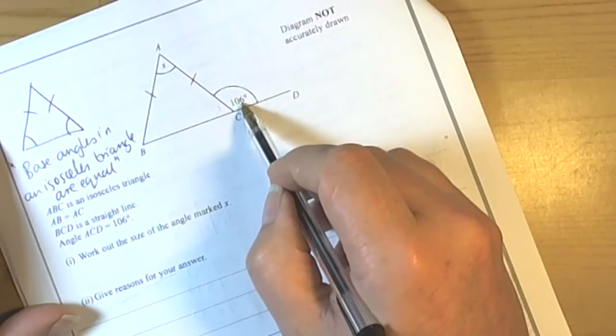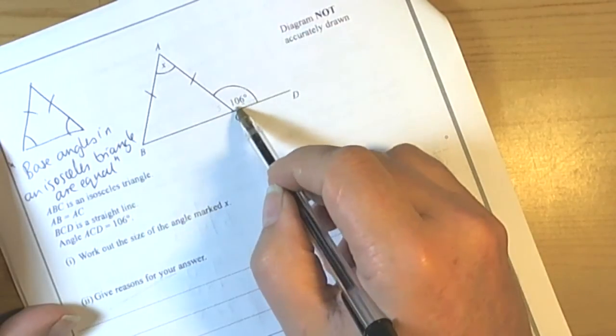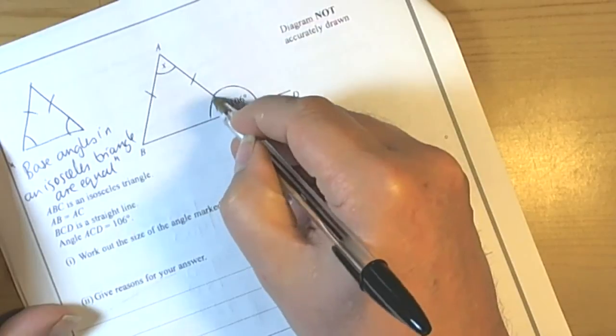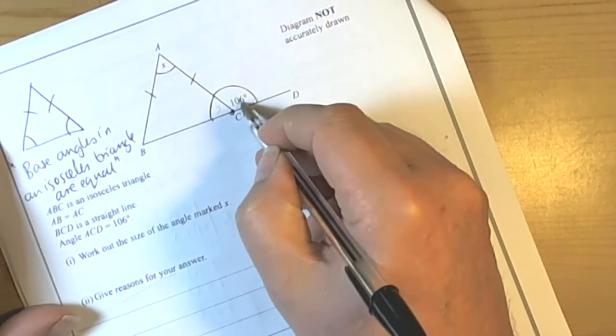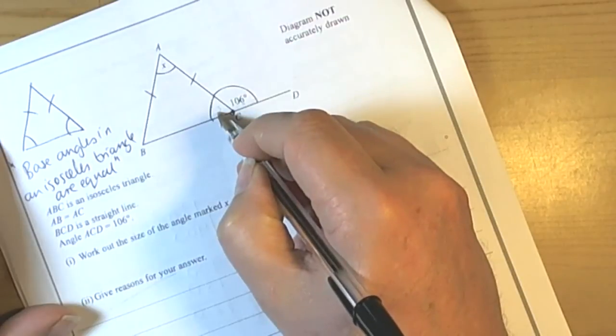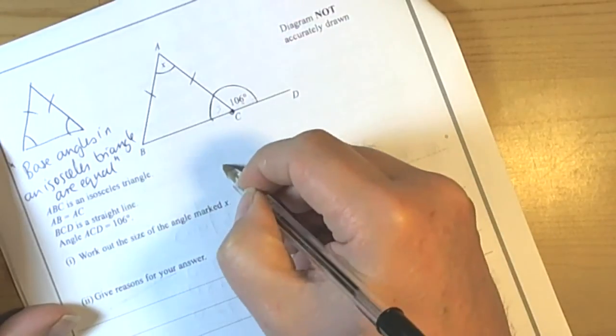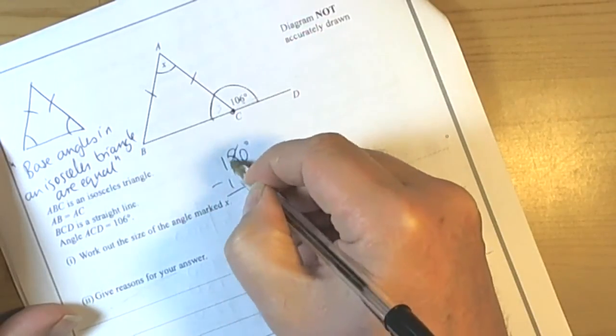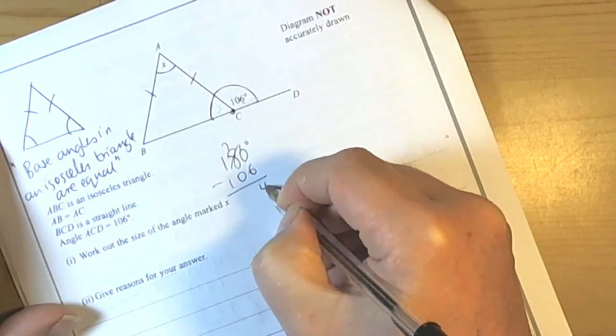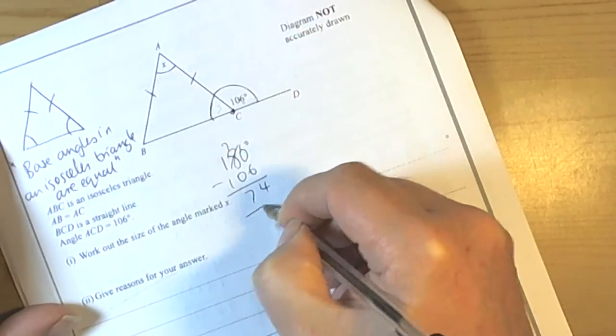Well, we can see that they told us an exterior angle here, so the outside of the triangle. There is a theory that says if we know two angles meet at a point on a straight line, then they add up to 180 degrees. So the first sum we can do is 180 take away 106. 10 take away 6 is 4, so 74 degrees.